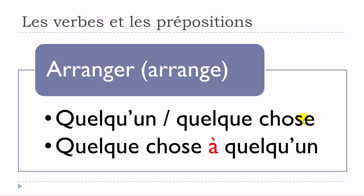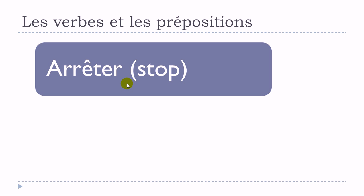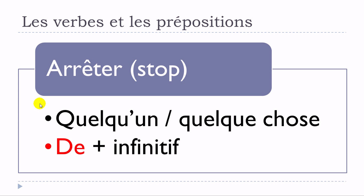Next verb: arrêter — meaning 'to stop.' First structure — no preposition: arrêter quelqu'un or arrêter quelque chose. Then: arrêter de plus infinitif — the verb should be at the infinitive form. So: arrêter quelqu'un, arrêter quelque chose, arrêter de plus verb à l'infinitif.